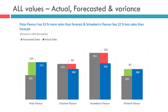In the current visual, you can clearly see that the Actual Sales for Pista Flavors is 473,000. Forecasted Sales is 3,50,000 and thus the difference between these two is 1,23,000, which is displayed in green color. Similarly, for Chocolate Flavor, Actual Sales is 3,88,000, Forecasted Sales was 4,51,000, and the difference between these two was 64,000, shown in red color.